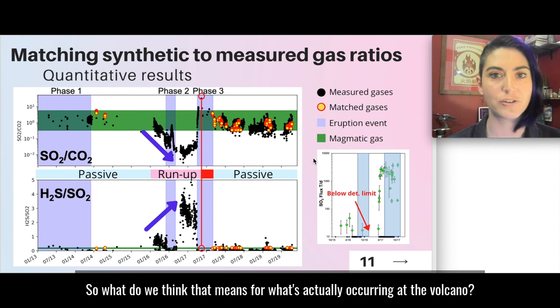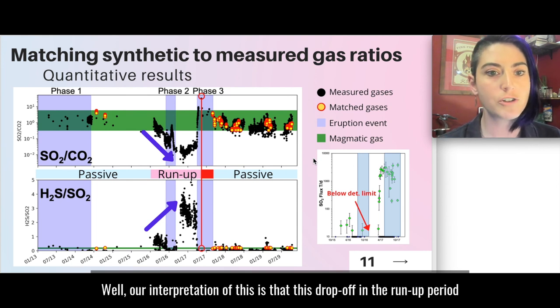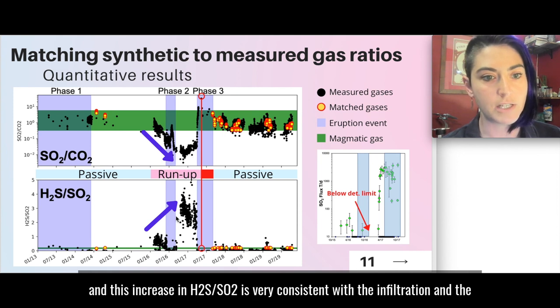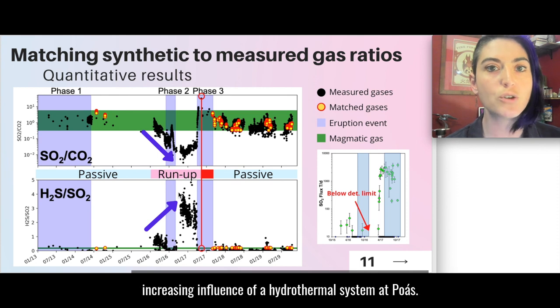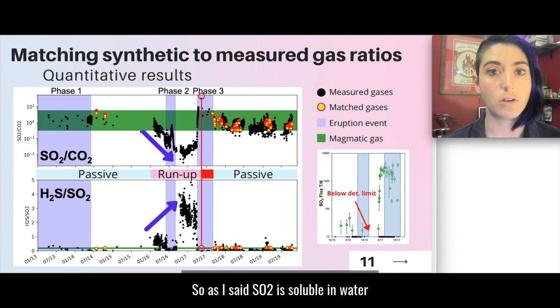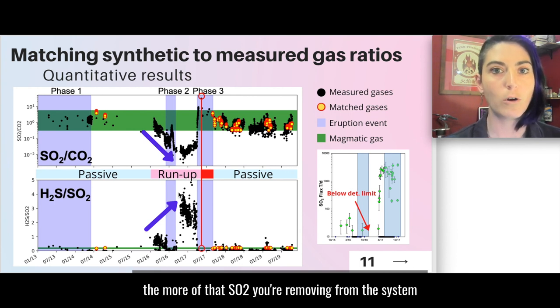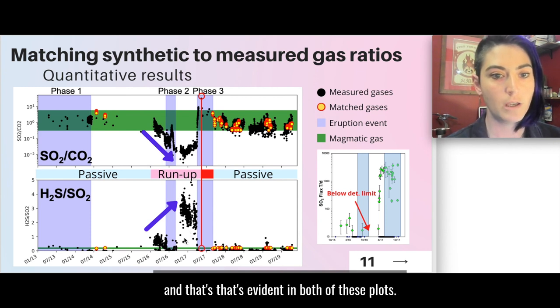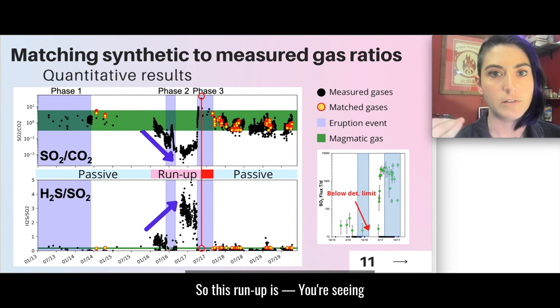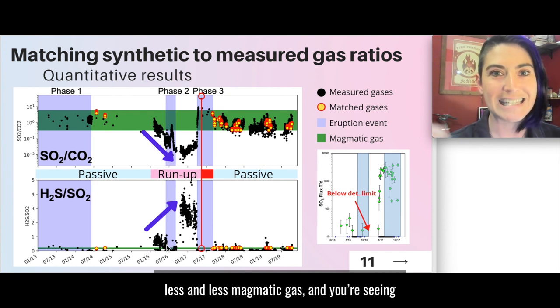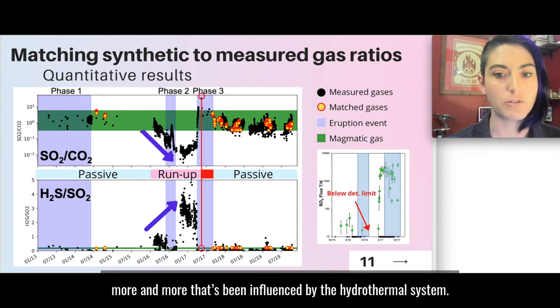So what do we think that means for what's actually occurring at the volcano? Well, our interpretation of this is that this drop-off in the run-up period and this increase in H2S/SO2 is very consistent with the infiltration and the increasing influence of a hydrothermal system at Poas. So as I said, SO2 is soluble in water. And so the more interaction from a hydrothermal system you have, the more of that SO2 you're removing from the system. And that's evident in both of these plots. So this run-up is showing less and less magmatic gas and more and more that's been influenced by the hydrothermal system.